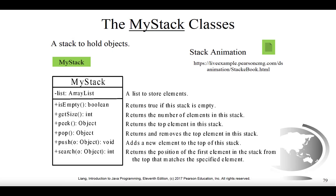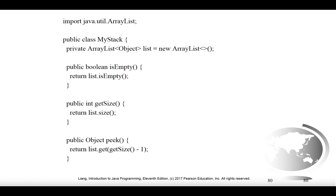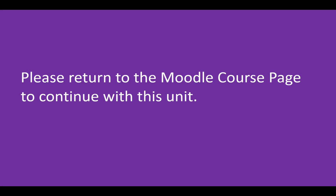We're now going to revisit the implementation of MyStack. Last time we implemented it using a normal array, and this time we're going to do it as an ArrayList. Importantly, this makes no difference to the user because it's an implementation detail. In the UML diagram shown here, the ArrayList is not a visible data member — just as the array in the initial implementation wasn't visible. The user only sees the public methods and doesn't know or care whether we used an array or an ArrayList. Using an ArrayList simply makes the implementation somewhat easier for us.